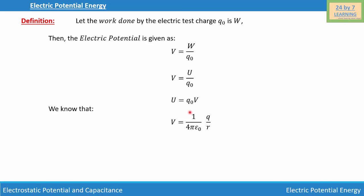Let's substitute that value. The electric potential energy is given as U = Q₀ times V, where V = (1/4πε₀)(Q/R).